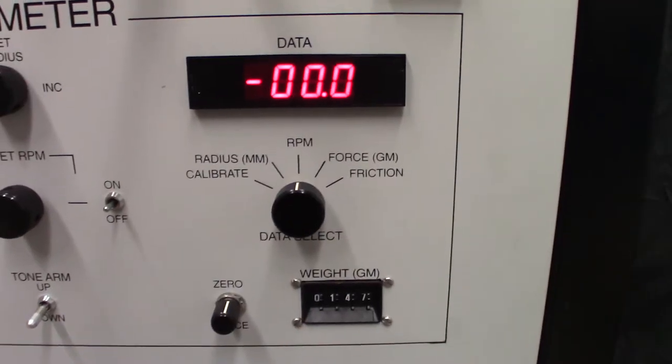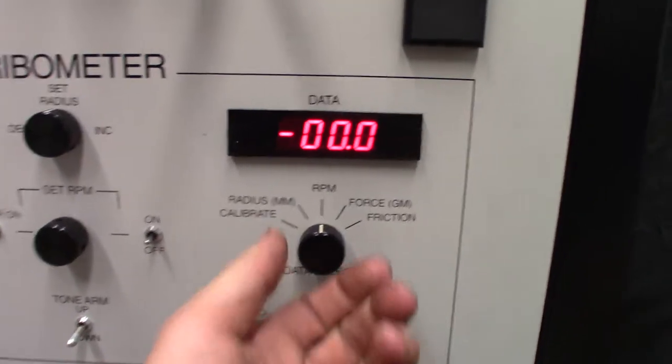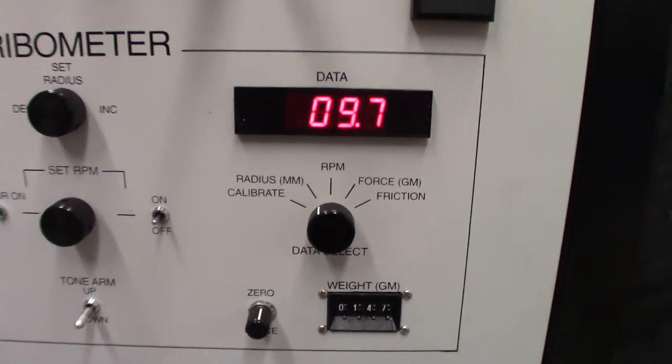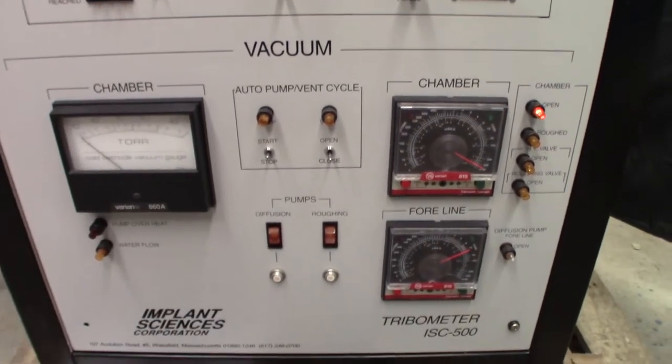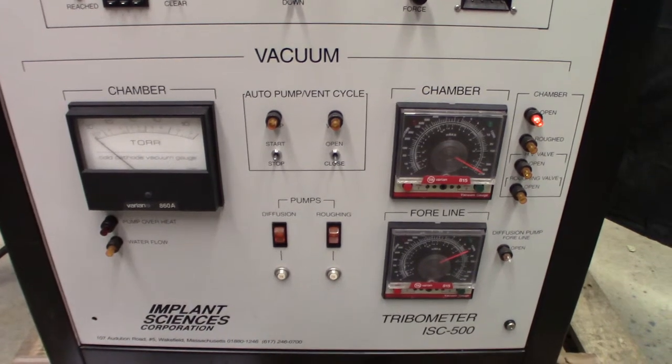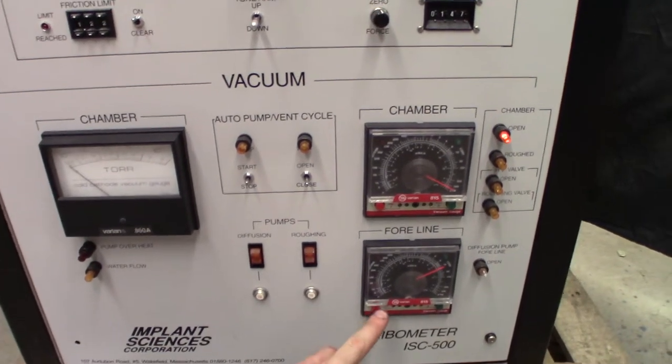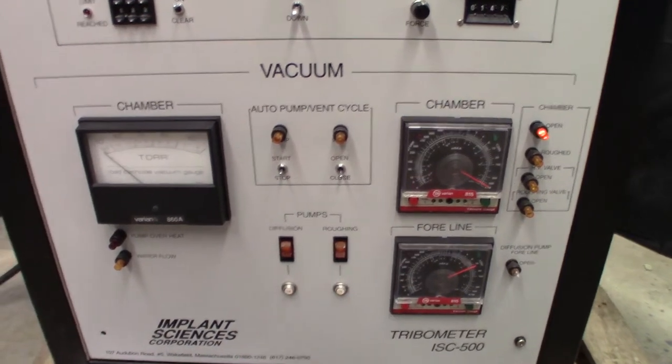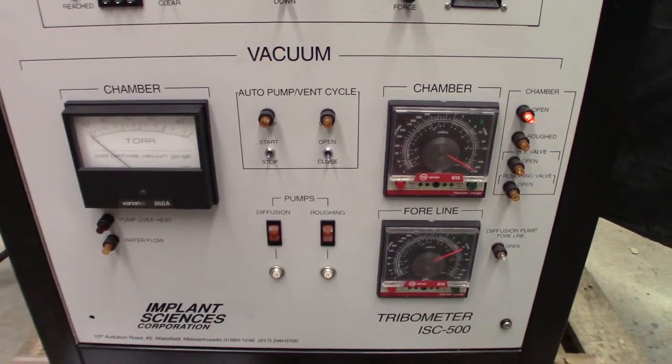You can then turn it to RPM to monitor the RPM and the radius and then calibrate. Down below is the vacuum, all the vacuum controls. So this unit uses a roughing pump, a mechanical pump, and then also a diffusion pump.